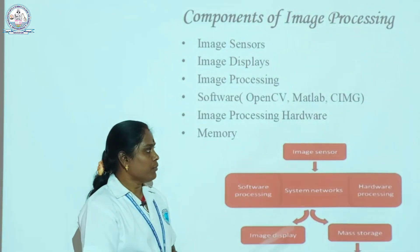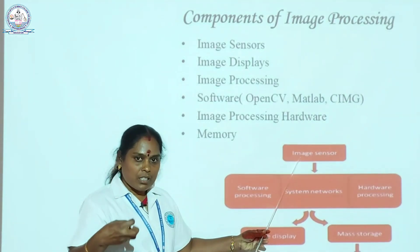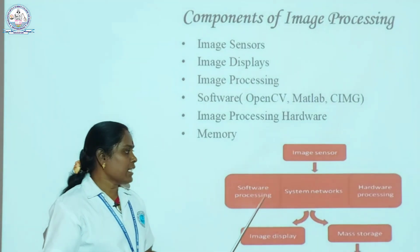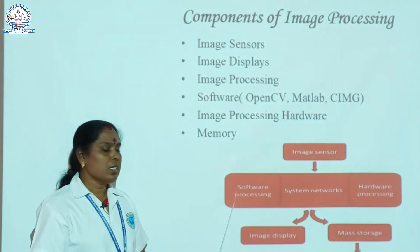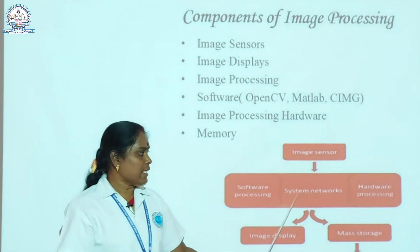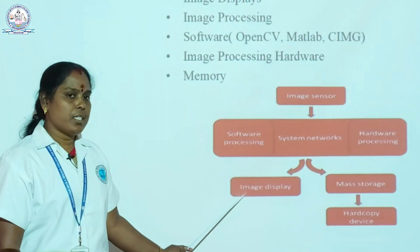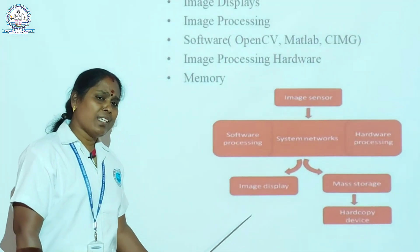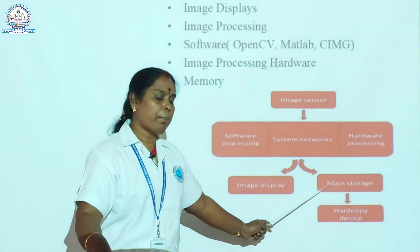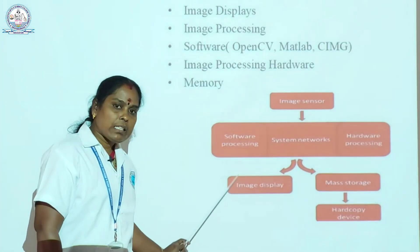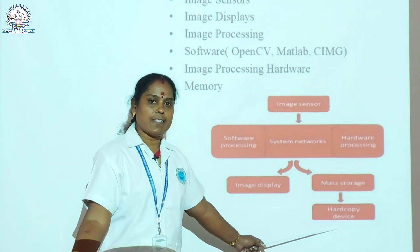This is the pictorial representation. First you send the images, which are scanned into the computer. Three components are needed to process the images: software processing, system networks, and hardware processing. Two output components are image display and mass storage. Image display outputs the images; mass storage stores the images in full memory capacity. Overall, these components display images on hardware devices such as printers or scanners.